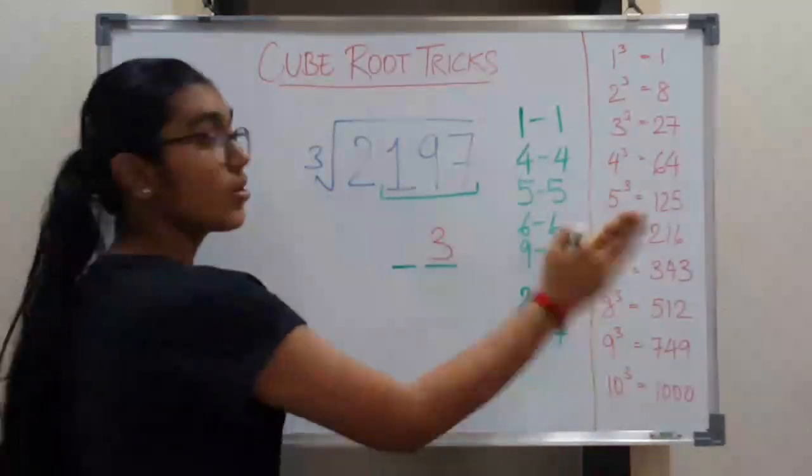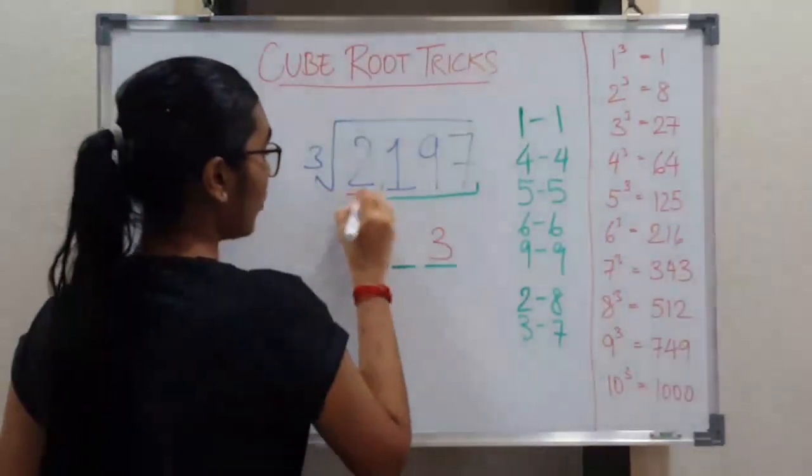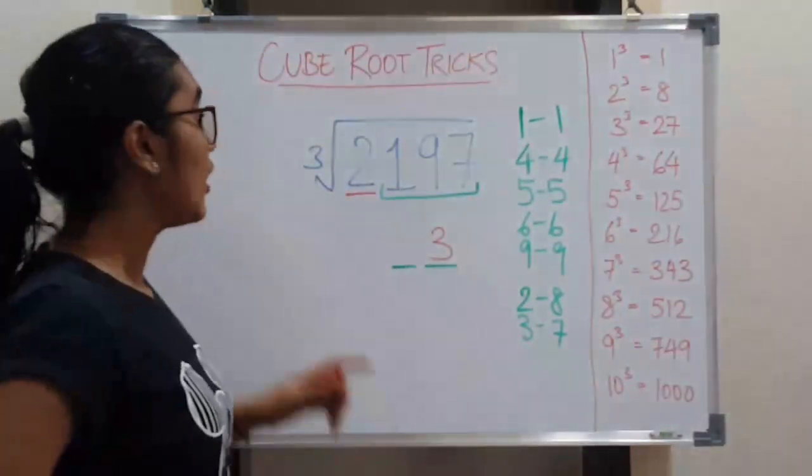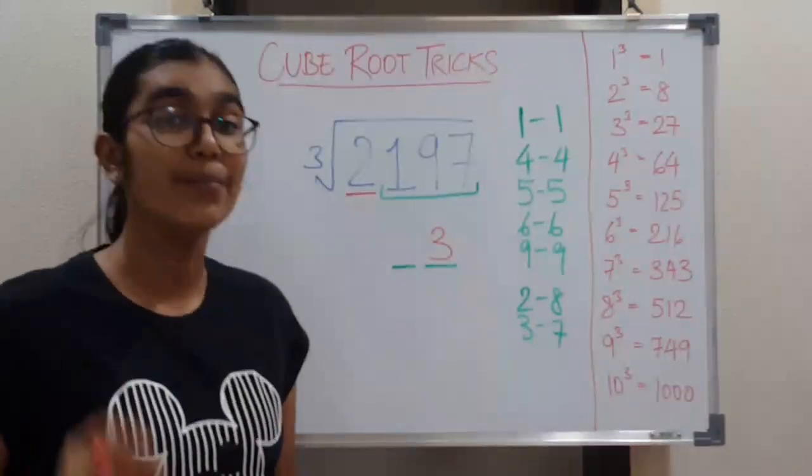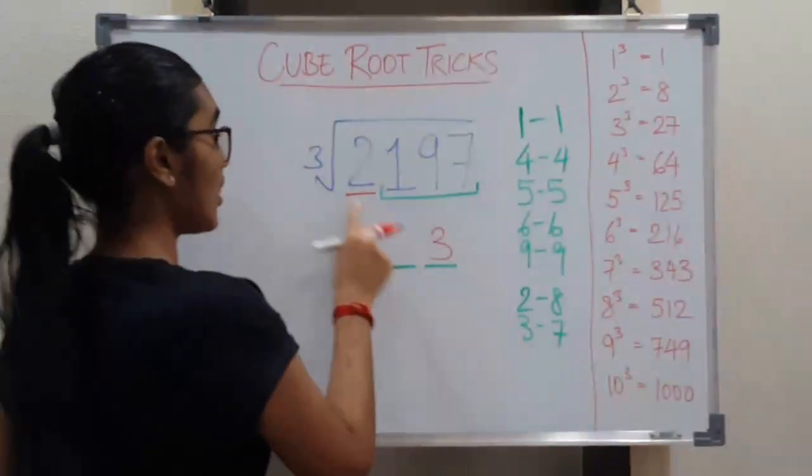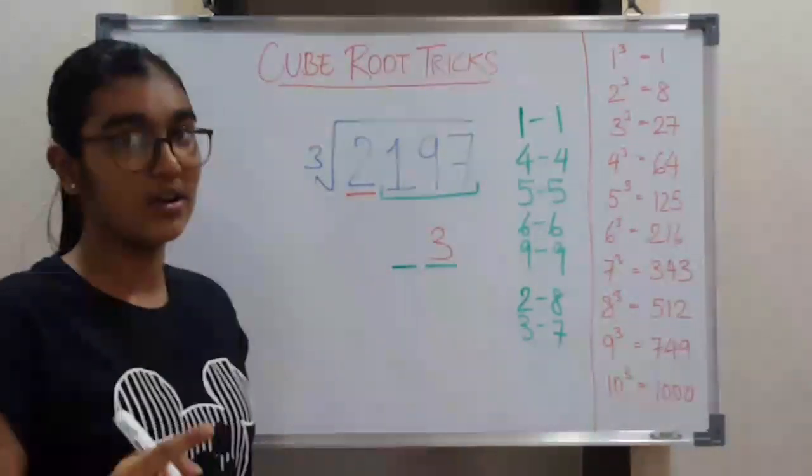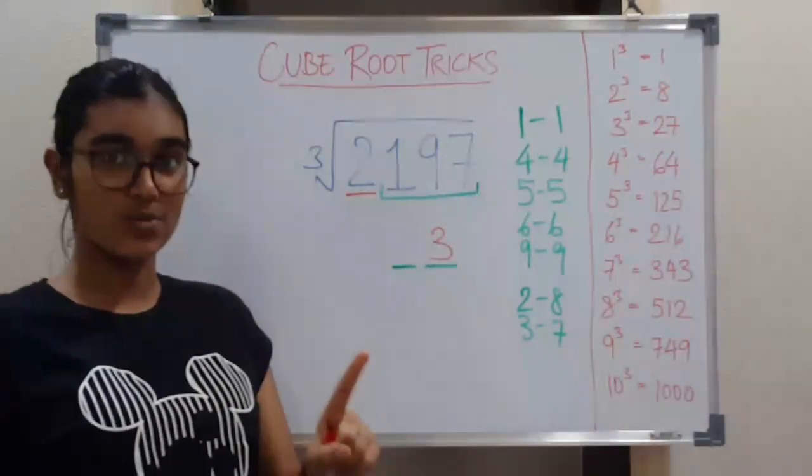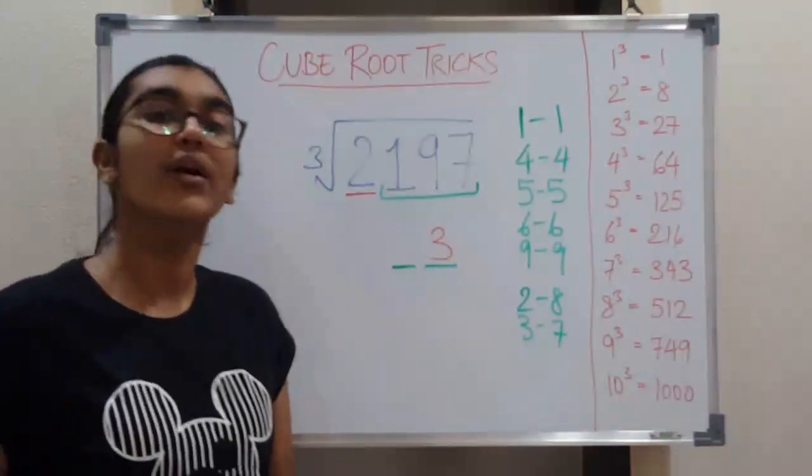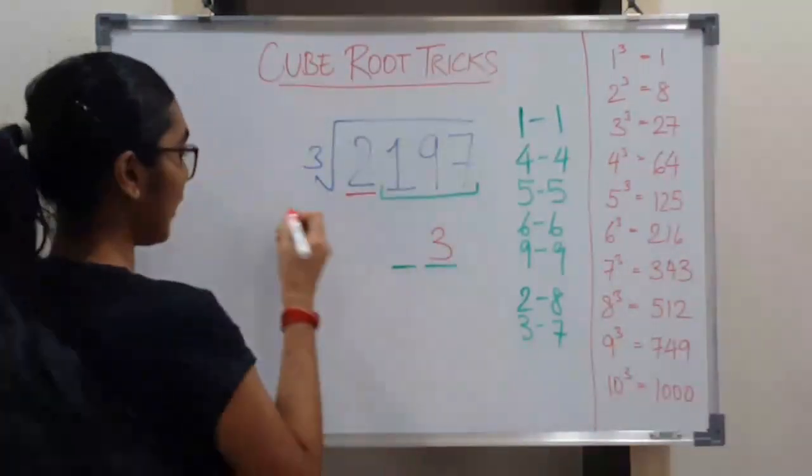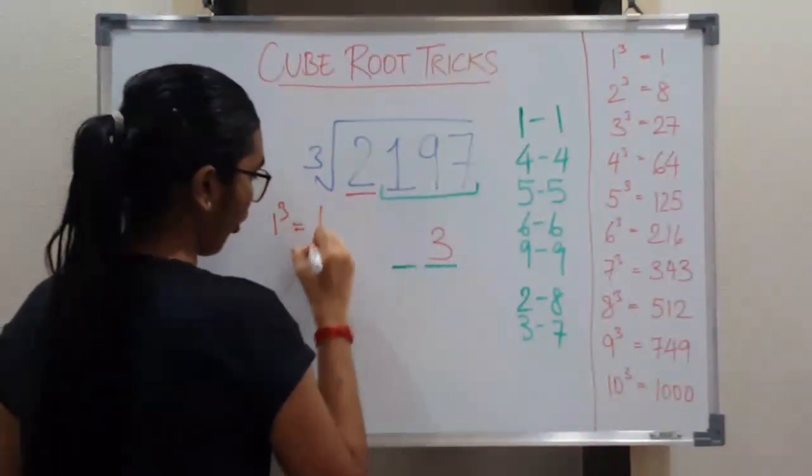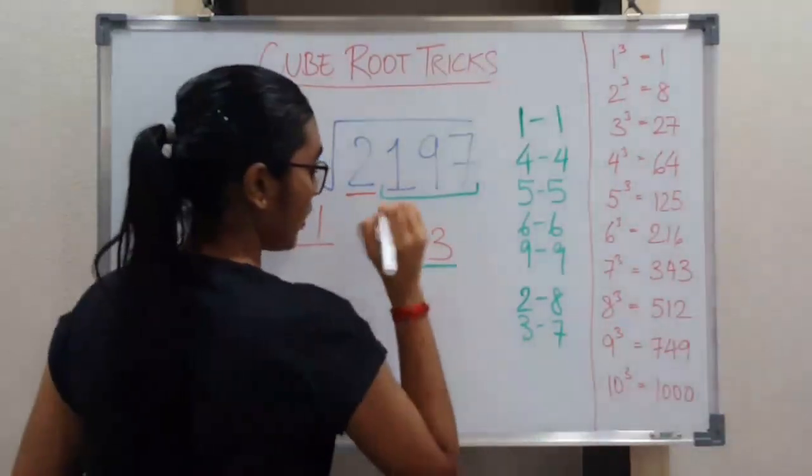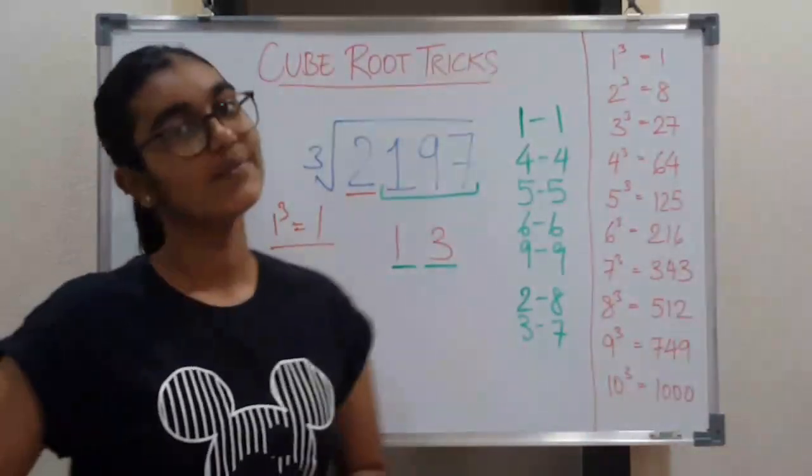Now what we have to do is exclude the three numbers and look at this number that is there. Now you have to see what is the perfect cube number just before that. So that is 1. Now here you need to find what is it the cube of. So 1 is the cube of 1 itself. So here is our number 1. It is that easy.